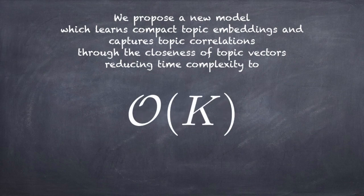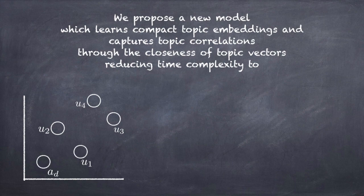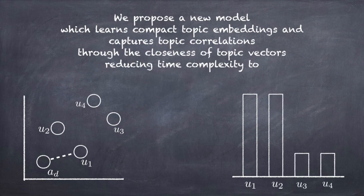We induce continuous distributed representations for latent topics, and embed documents into the same vector space, and characterize document topic proportions with its distance to the topics. Nearby topics in the embedding space tend to have similar weights in the document.